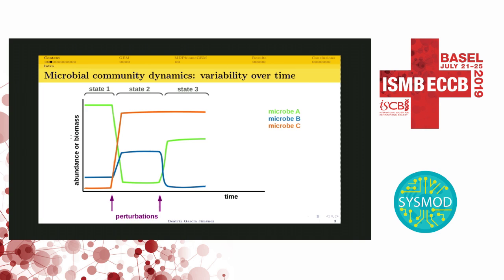Some of these states could be healthier than others. For example, if we consider that microbe C, the orange one, is a pathogen, then states 2 and 3 will be less healthy than state 1. So it would be great to be able to predict the perturbation to apply in state 3 to move the community to a healthier state where the biomass of the pathogen, microbe C, decreases.